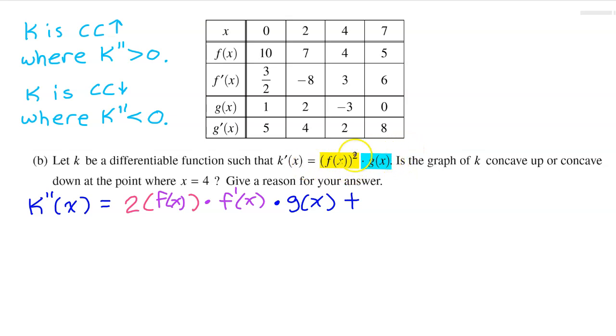The second time through, you leave the yellow function alone. So I'm just going to copy down the f of x and the whole thing is squared. But then the second time around, you take the derivative of the blue function. So now I'm going to multiply by g prime. So this whole thing is an expression for k double prime.